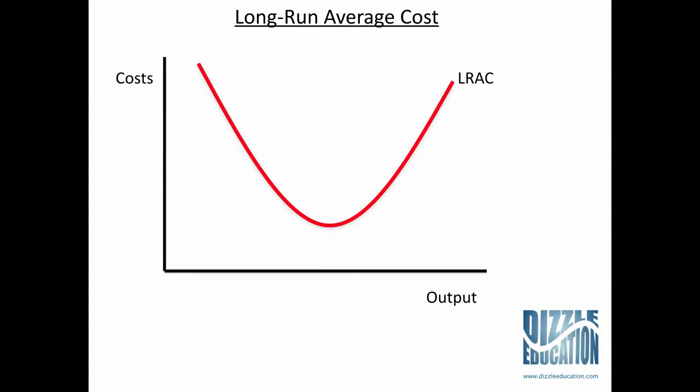This diagram here represents your long-run average cost curve. Up to this line here, we are experiencing economies of scale, which you should have already watched and learnt about from the previous video. With economies of scale, as your output increases, your average cost, or cost per unit, is going down. You can see on the red line here, our costs are going down, and the entire time on the left-hand side, we are experiencing economies of scale.